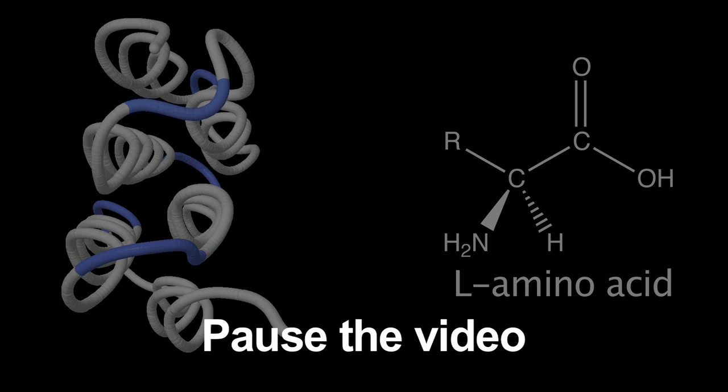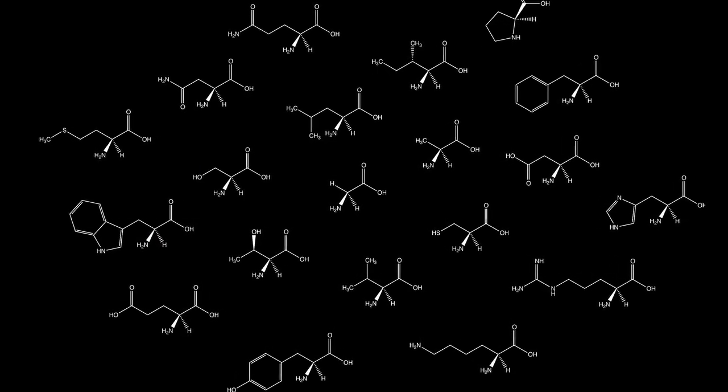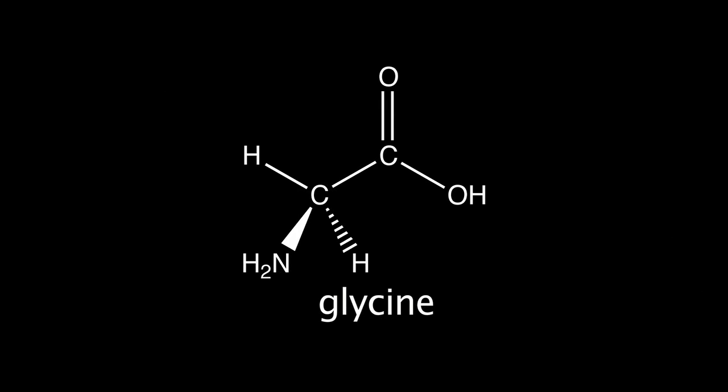An amino acid contains both an amino group and a carboxylic acid group. It also contains a hydrogen atom and a side chain. The central atom is carbon. Of the 20 naturally occurring amino acids, glycine is the only achiral amino acid — its side chain is a second hydrogen atom. The remaining 19 amino acids have the L configuration.